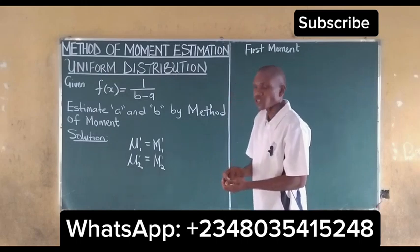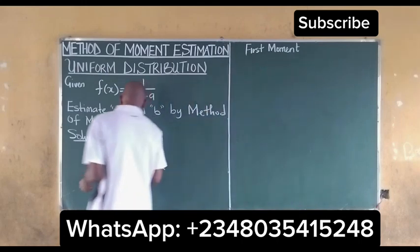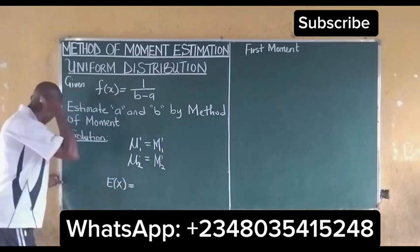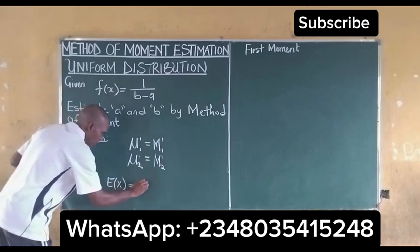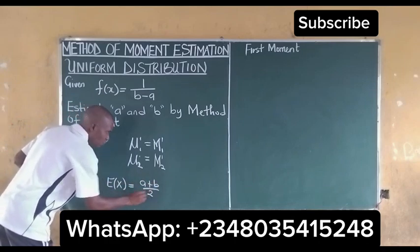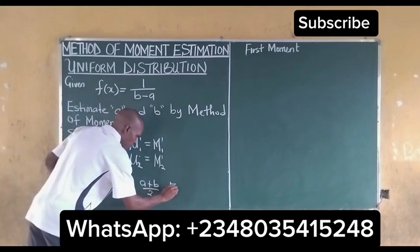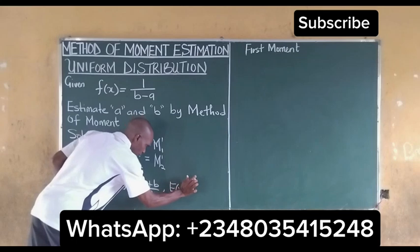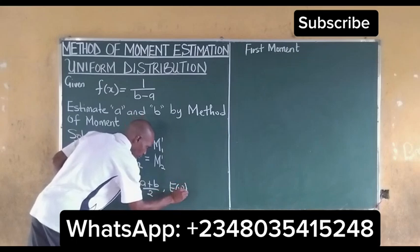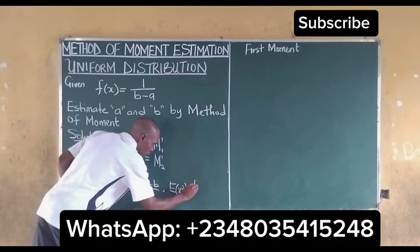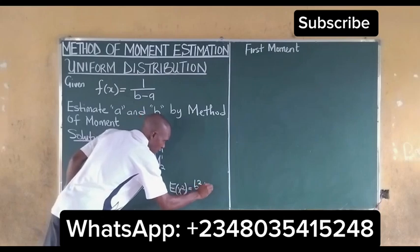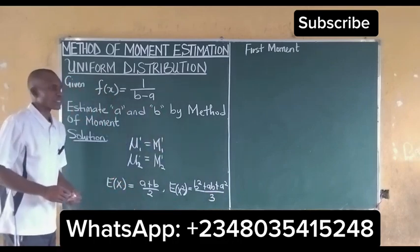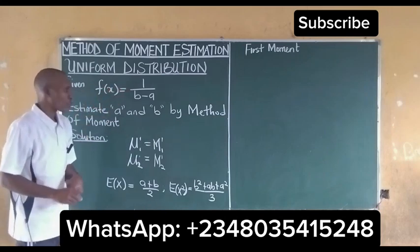Before we take the first moment, we should note certain parameters. The expected value of X for the first moment gives (A + B) / 2. Also, the expected value of X squared for the second moment is equal to (B² + AB + A²) / 3. We will utilize these before finding the method of moments estimates.